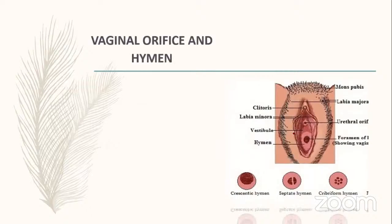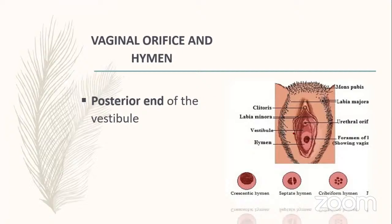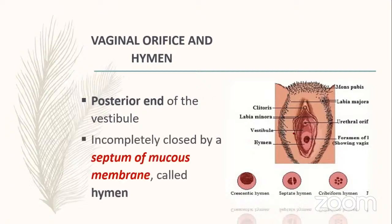The vaginal orifice is present at the posterior end of the vestibule. It is incompletely closed by a septum of mucous membrane called the hymen.